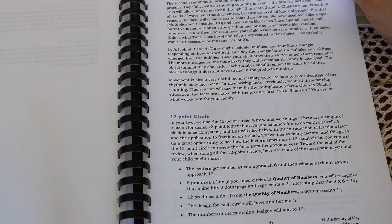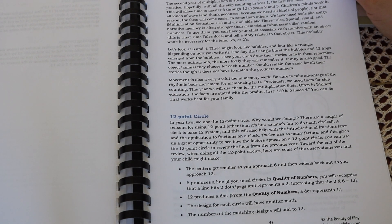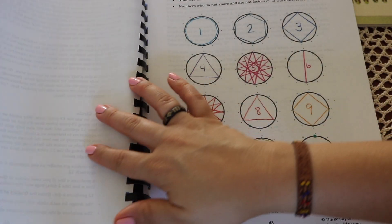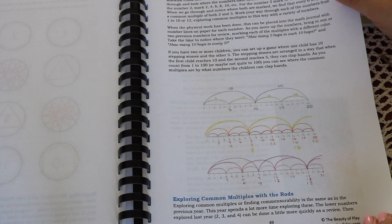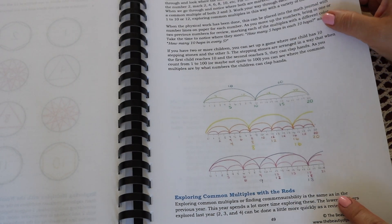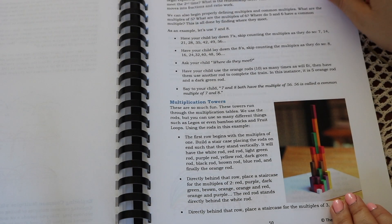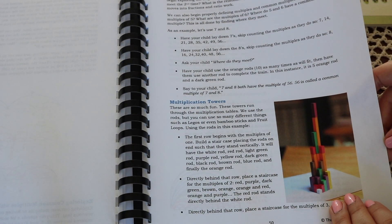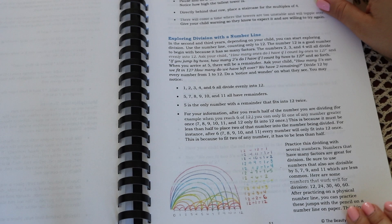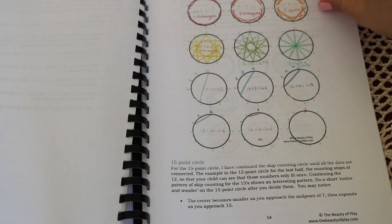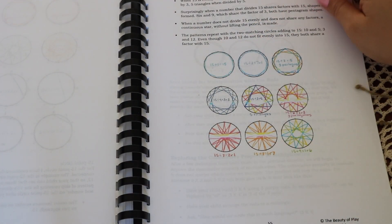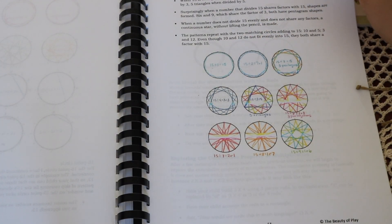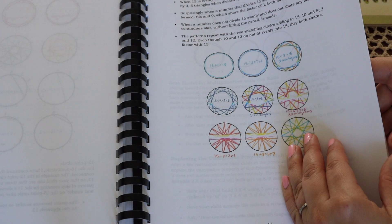In year two, we move into more in-depth understanding of the concepts. More time is spent on working on the facts, which are memorized through rhythmic movement, counting wheels, and games. We'll explore more number lines, the 12-point circle medallions, and more extensive use of the rods, like building multiplication towers. We also introduce the 15-point circle and explore more division with number lines, rods, and circles.